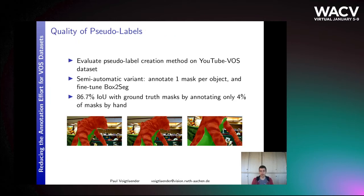When we create masks in this way, we can evaluate the quality of the generated pseudo-labels using the YouTube VOS training set. In the semi-automatic variant, we annotate one segmentation mask for every object in a single frame, use this to fine-tune Box2Seg, and then evaluate it on the other frames to create segmentation masks automatically. Doing it this way, we only need to annotate 4% of the masks by hand and achieve 86.7% intersection over union with the ground truth mask — a very precise result at very low cost.